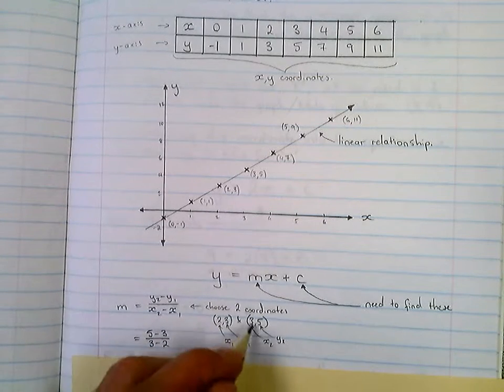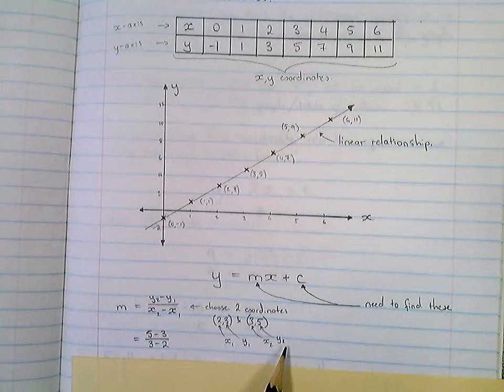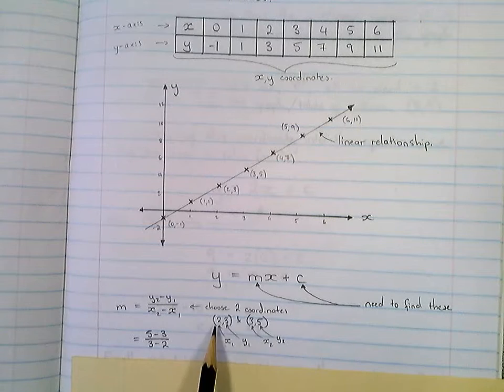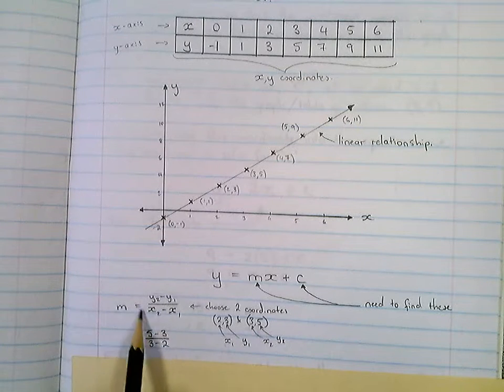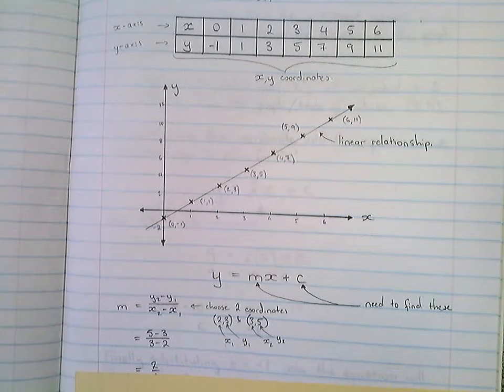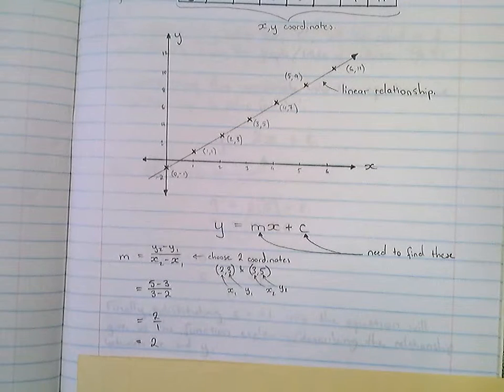So first coordinate, second coordinate, x1, y1, x2, y2. I've then substituted these values which I've drawn arrows to into this formula, such that I get this and then I simplify that expression to 2.